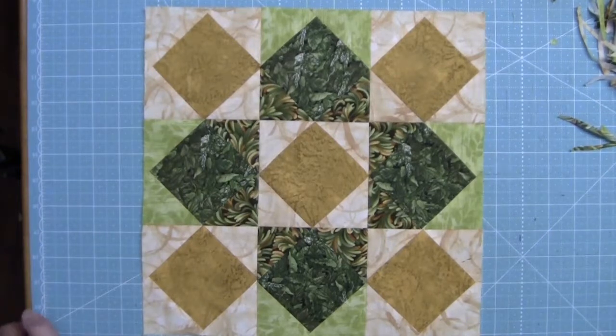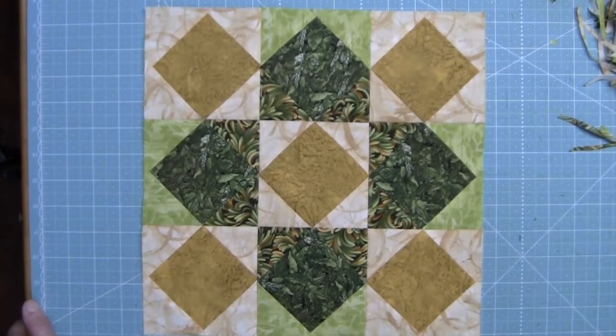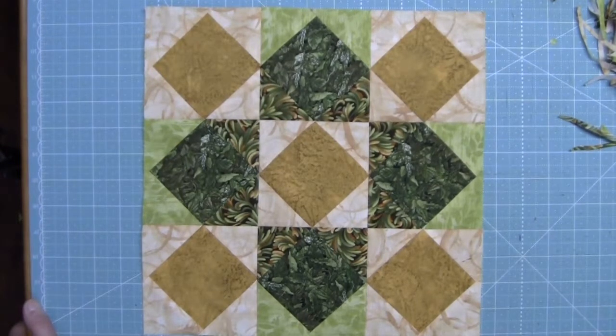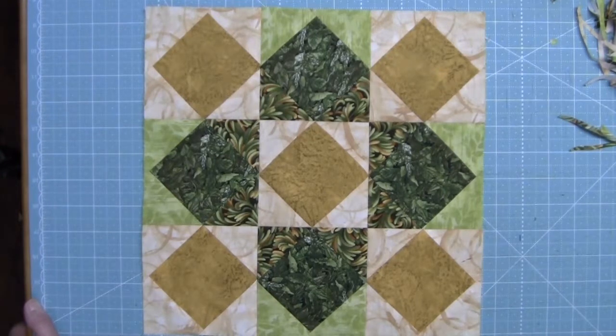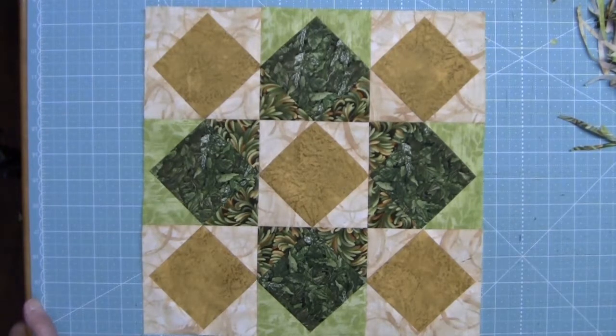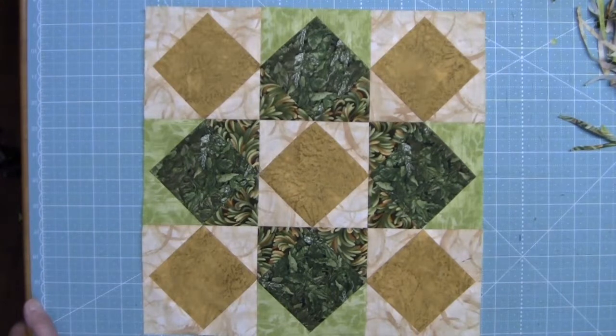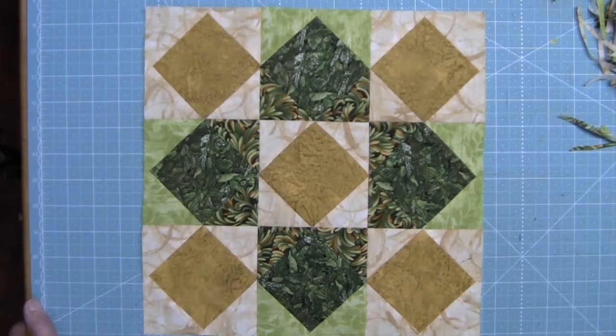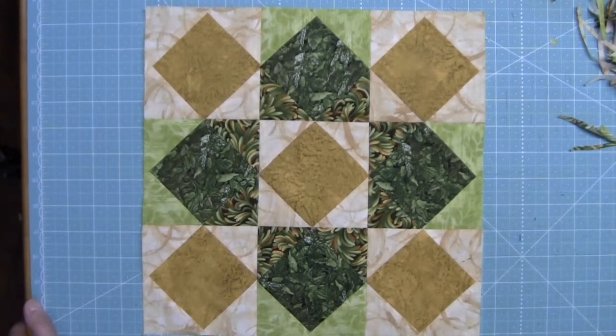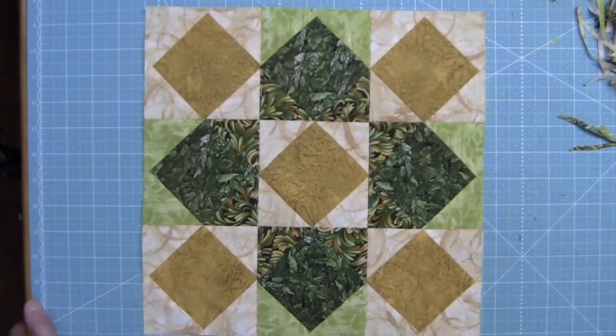And here we have block 20 Kansas Star of the 2018 Cheshire Quilters Guild block of the month. Please look for the other video on finishing your block of the month quilt with all 20 blocks. It's been a pleasure presenting this block of the month to you. And I hope to see you back next year for the 2019 block of the month.